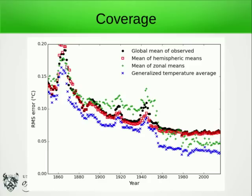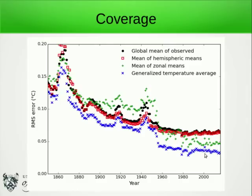The first method is the cosine-weighted mean, shown by the black dots. For recent decades the error due to coverage is about seven hundredths of a degree Celsius. This increases before about 1960 when we lack Antarctic stations, and increases substantially during the two world wars and in the 1860s and 1870s when coverage is particularly poor. The Met Office uses the mean of the hemispheric means, shown by red squares — marginally better for recent decades, significantly better during the world wars. The mean of the zonal means, shown by green crosses, works much better for recent decades but is worse prior to 1960. Finally, the generalized least squares average, shown by blue crosses, is much better for recent decades with an error of only about three hundredths of a degree Celsius, and is always better than any of the other methods, even in the earlier periods.